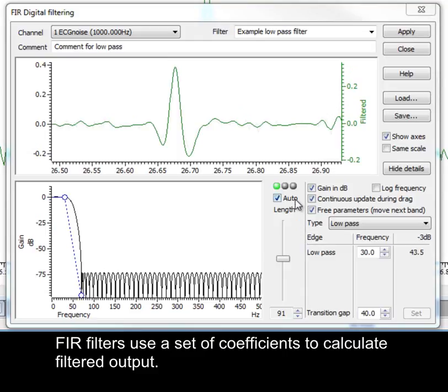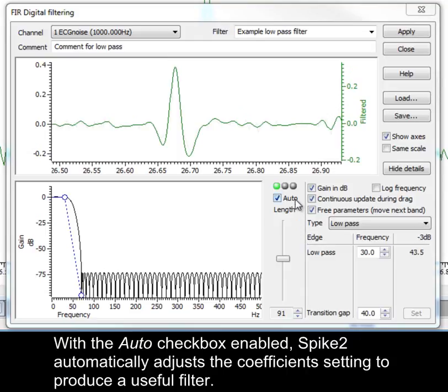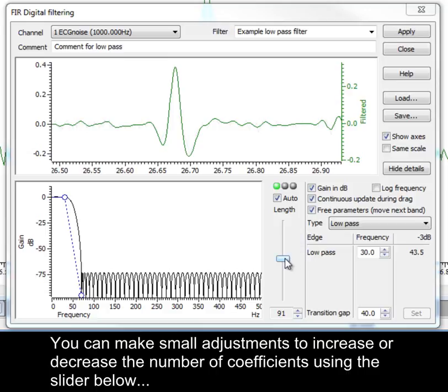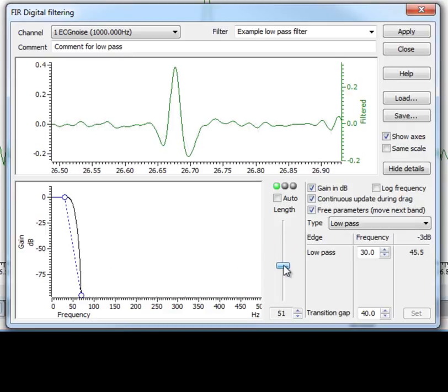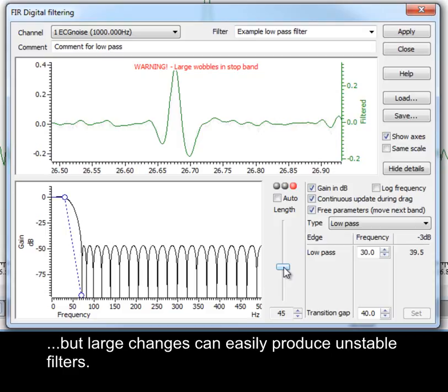FIR filters use a set of coefficients to calculate the filtered output. With the Auto checkbox enabled, Spike2 automatically adjusts the coefficient setting to produce a useful filter. You can make small adjustments to increase or decrease the number of coefficients using the slider below, but large changes can easily produce unstable filters.